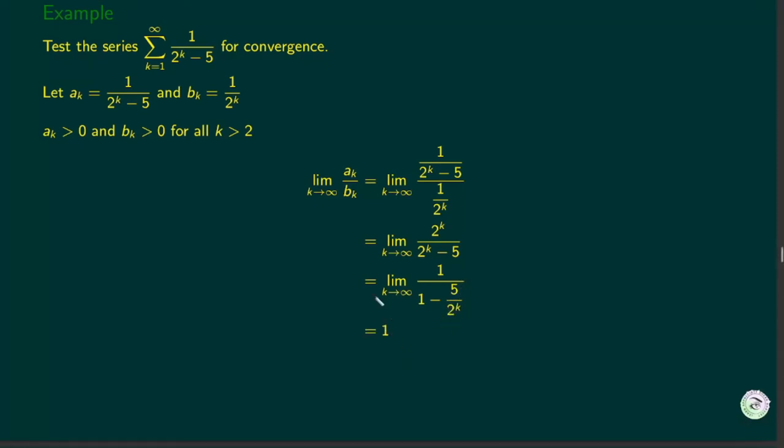So here now I showed this limit to be a finite constant. Here we got 1. We can get any value, 2 or 3, as long as it's a finite constant it's fine. So this limit is 1. We know 1 over 2^k is a geometric series with common ratio half. Because of that, this converges. So from the limit comparison test, we can say this is also convergent.